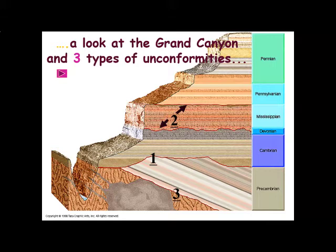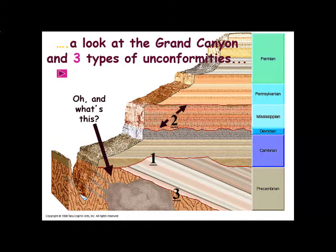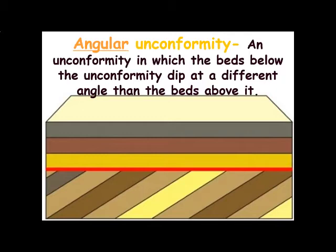If we look at the Grand Canyon, it has a whole series of different types of unconformities. Unconformities have three major types. There's a nonconformity, where non-sedimentary rocks have been uplifted and eroded with sedimentary rocks deposited on top. There's an angular unconformity, where you have tilted or folded sedimentary beds with horizontal sedimentary beds deposited on top of them.